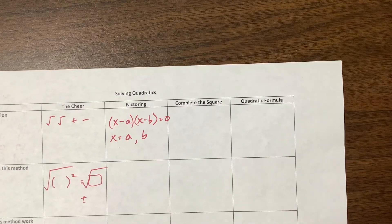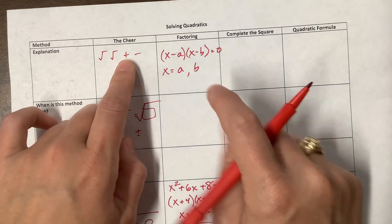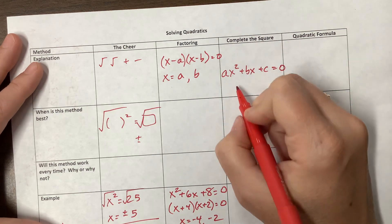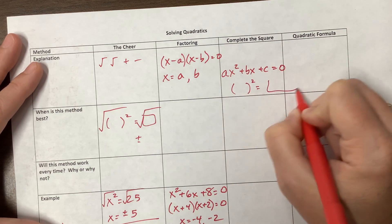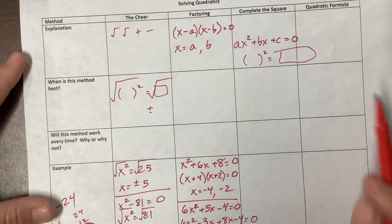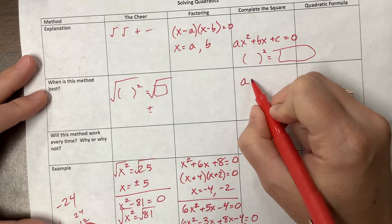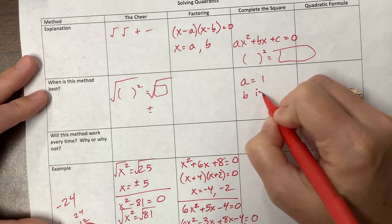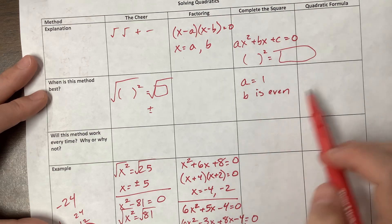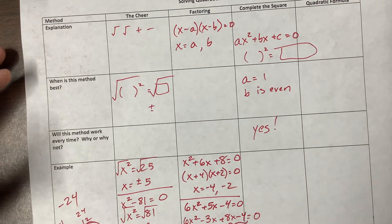Next: completing the square. What we're trying to do is get it to a point where we can do the cheer. We start with ax squared plus bx plus c equals 0 and try to get it down to something squared equals some value, then go square root, square root, plus, minus. When is this method best? It will always work, but I like it when a equals 1 and b is even — it's ridiculously easy.